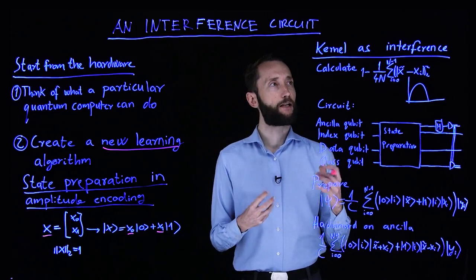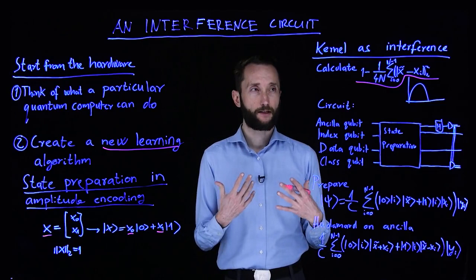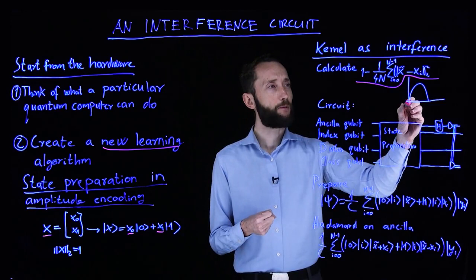So given this encoding we can start thinking about new kernels. The kernel that we are going to calculate is exactly this one. It does not really have a classical analog. It is easy to calculate classically as well, but it is very natural to do on a gate model of a quantum computer.